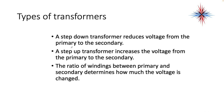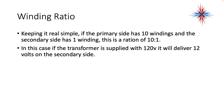A step-down transformer reduces the voltage from the primary to the secondary side. A step-up transformer increases the voltage from the primary to the secondary. The ratio of the windings between the primary and secondary determines how much the voltage is changed. Keeping it real simple: if the primary side has 10 windings and the secondary side has 1 winding, this is a ratio of 10 to 1. If the transformer is supplied with 120 volts, it will deliver 12 volts on the secondary side. This is a step-down transformer — primary has more windings than the secondary.